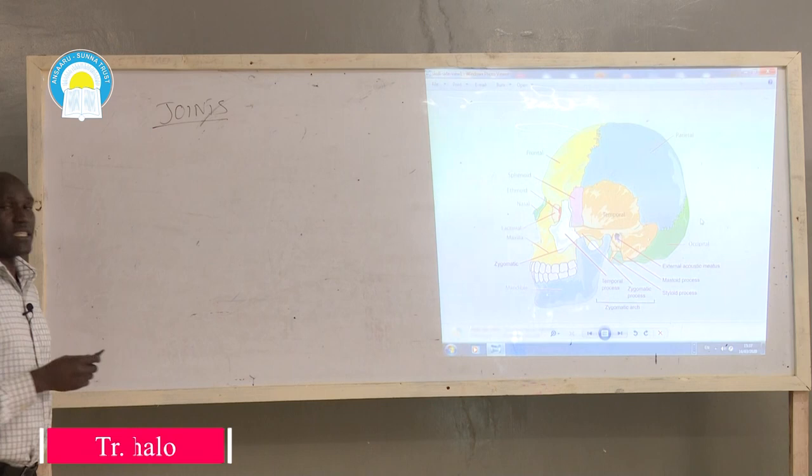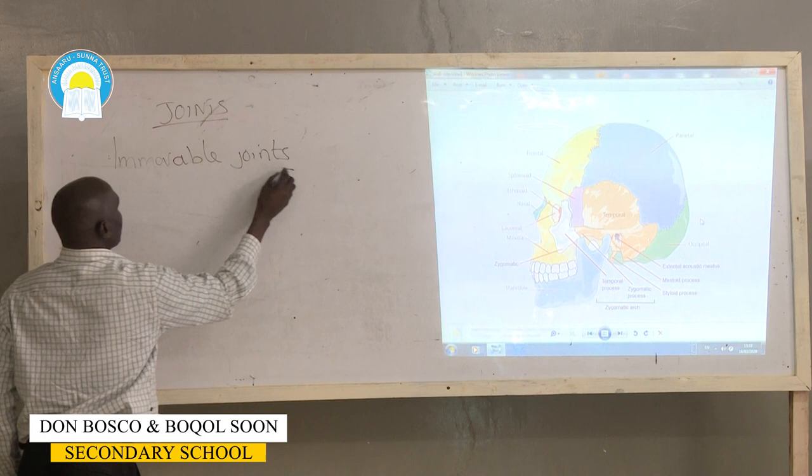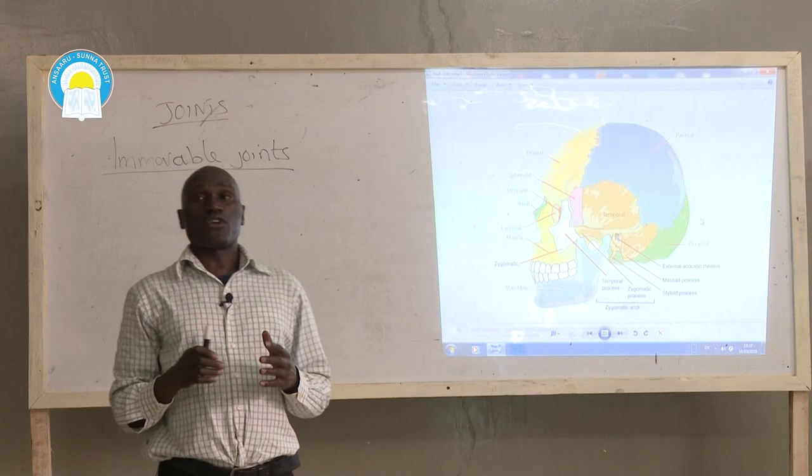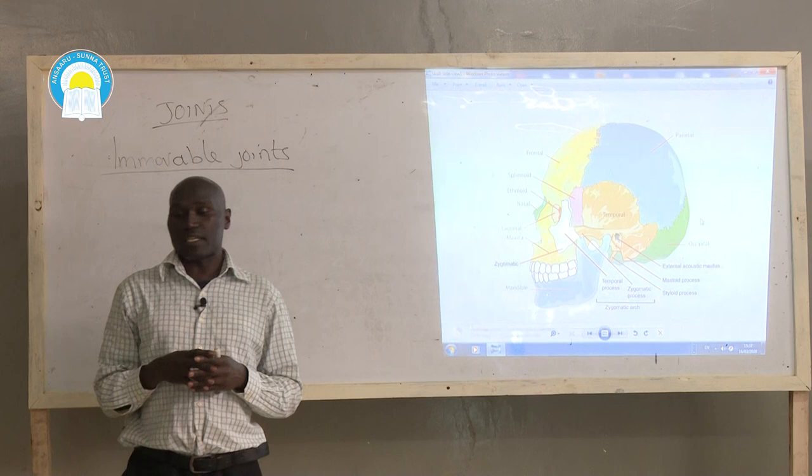An immovable joint is a joint or a point where two or more bones meet and there is no movement experienced at that particular point where the two bones or several bones come into contact.